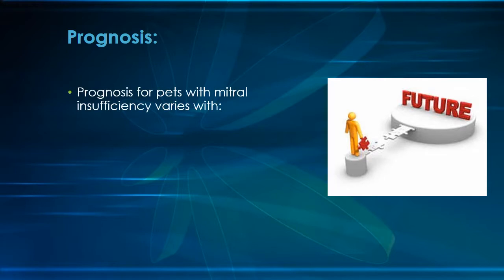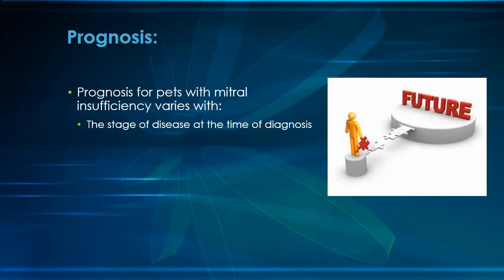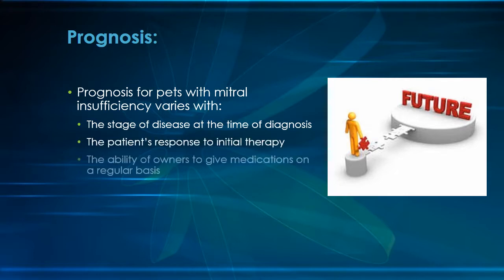The prognosis for pets with mitral valve disease varies with many factors. Pets diagnosed in class one with no symptoms may have two to three years before symptoms start to occur, and then another two to three years before they may succumb to the disease. For dogs presented in class two with symptoms only after exercise, we may expect two to four years of life expectancy. Pets in class three may live an average of 1.5 to three years, whereas dogs in class four may have a much shorter survival time.